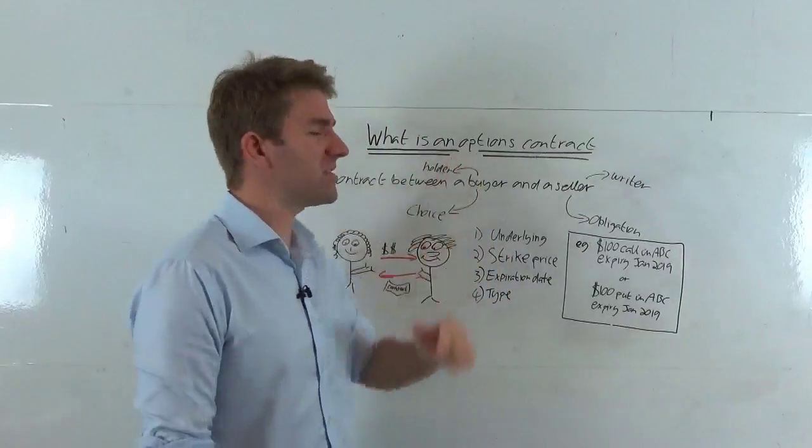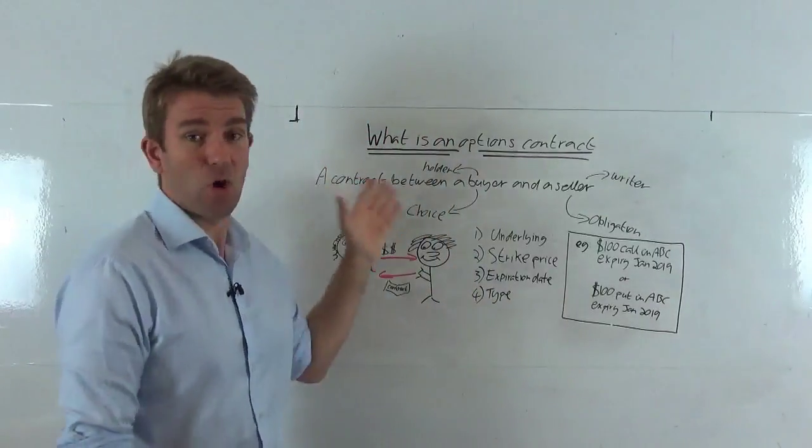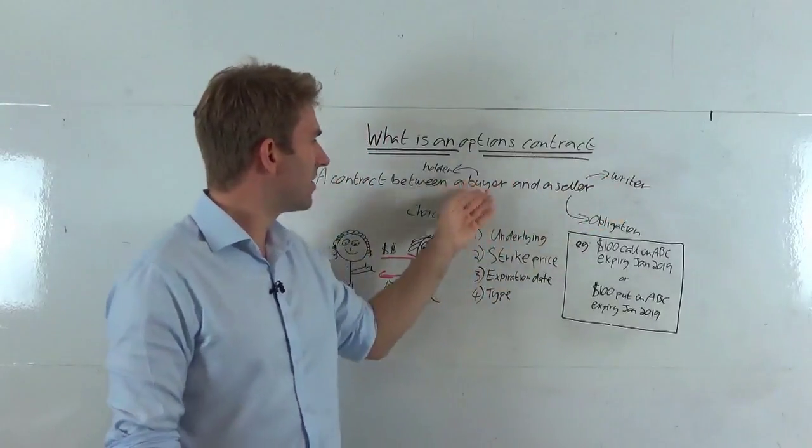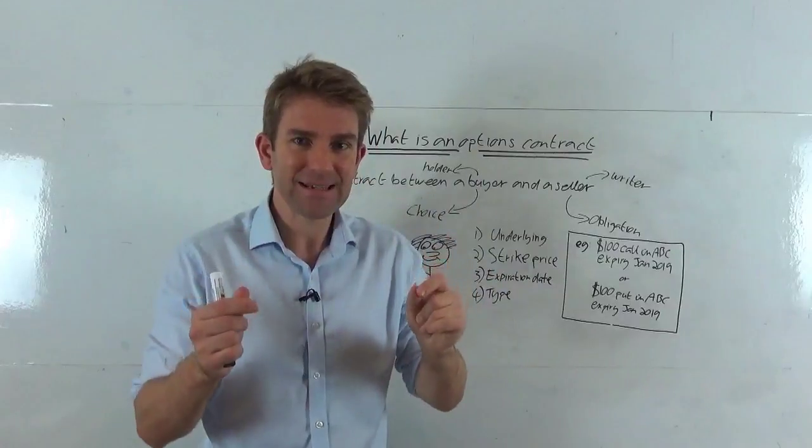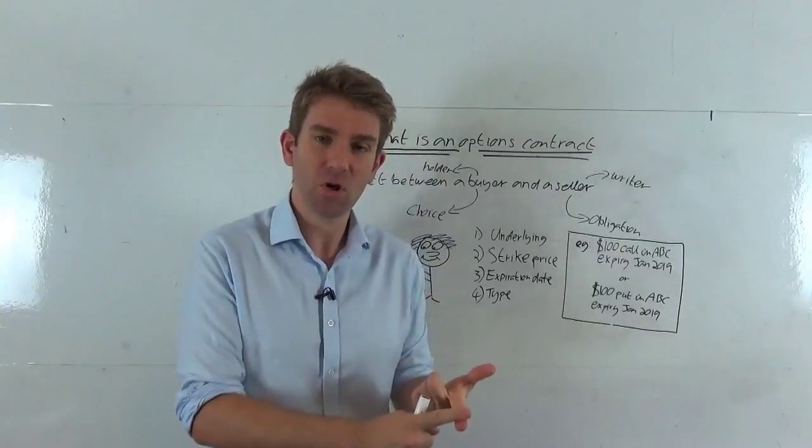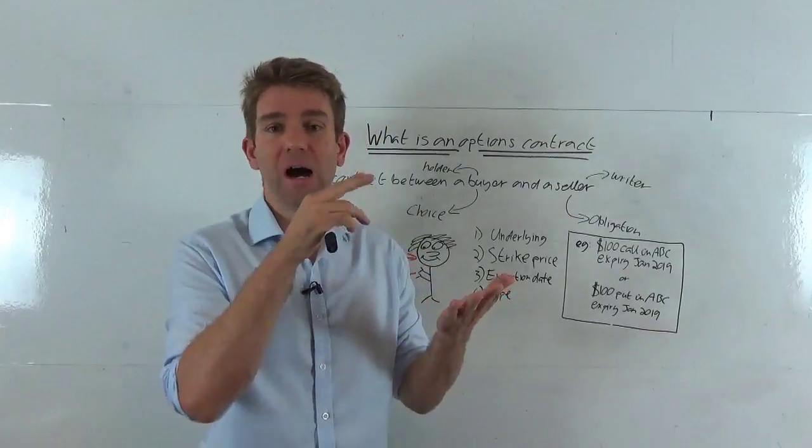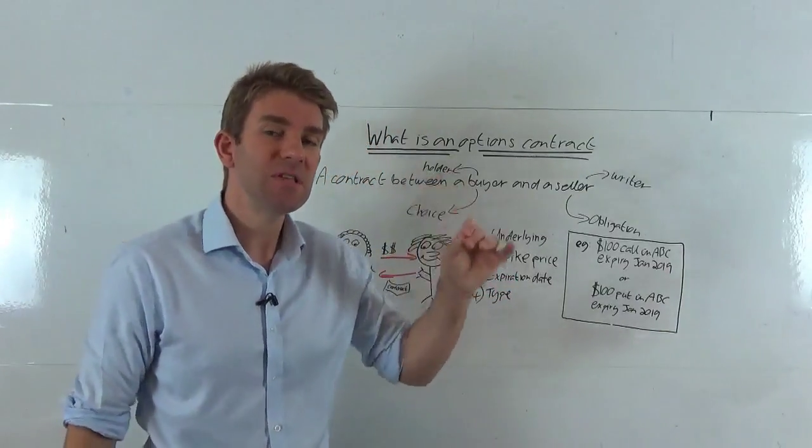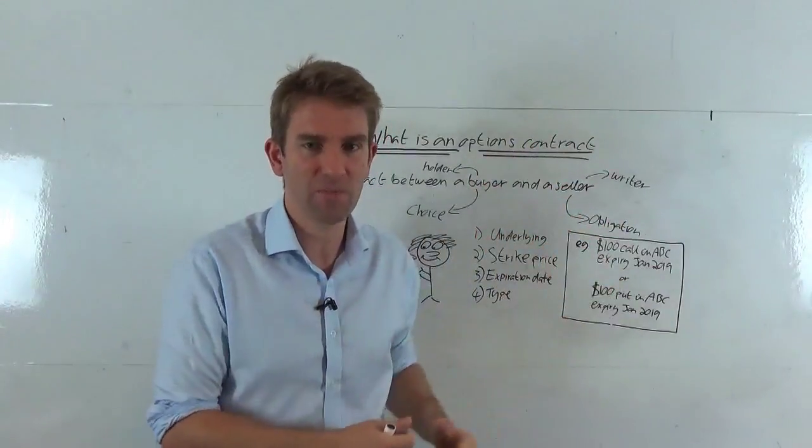All right, so what is an options contract? Very broadly, it is a contract between a buyer and a seller. The seller is often called a writer. The buyer is often called a holder. And it is the option to purchase a specific stock or asset, that could be a commodity, a currency pair, a stock, an index basket, an ETF at a specific price at a specific time in the future. Now, it sounds complicated, but let's look at some examples in a second.